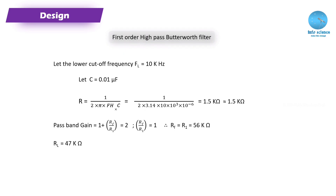Next, we discuss the pass band gain value. The pass band gain is 2.1, calculated as 1 plus Rf by R1.